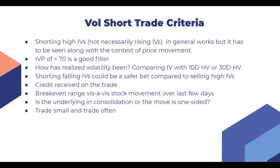Next is the credit which we are receiving on a trade - is it enough? There needs to be sufficient premium received upfront and sufficient theta decay available. Then we check what the breakeven range is compared to the stock movement over the last few days. If the stock is consolidating between 500 and 600 and the breakeven range we get by shorting volatility is outside that range, then it usually is a good trade to take.